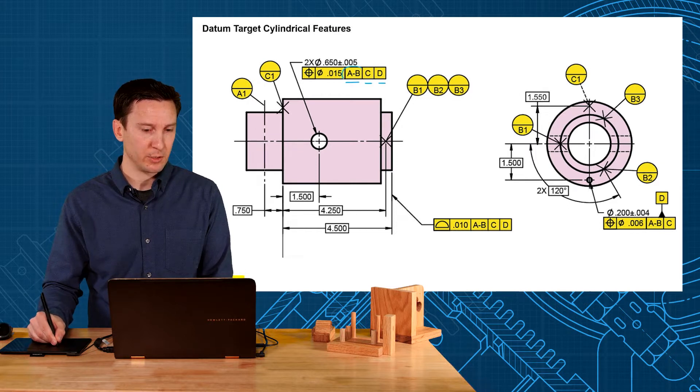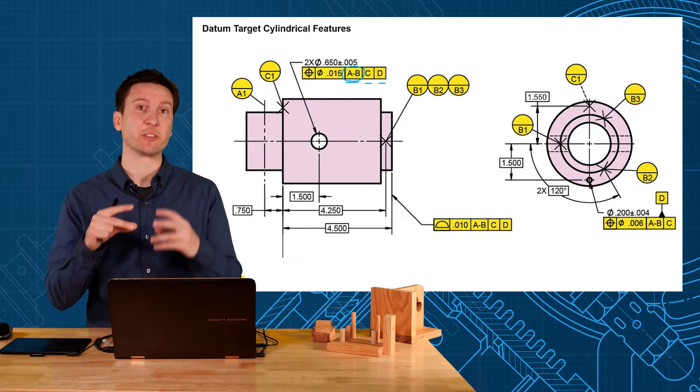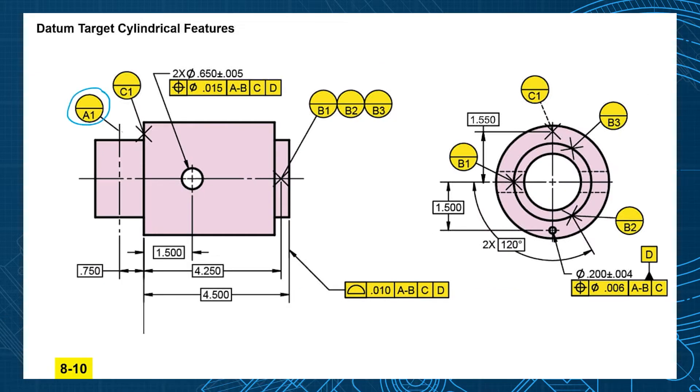A-B, remember, is two datum features that are establishing one datum. A1 is labeled here as this phantom line going across that cylindrical surface. That in our Y14.5 standard states that it's going to be a circular element that collapses at that basic distance.